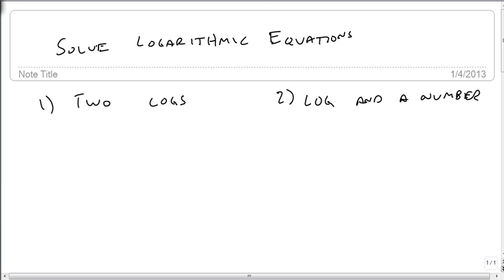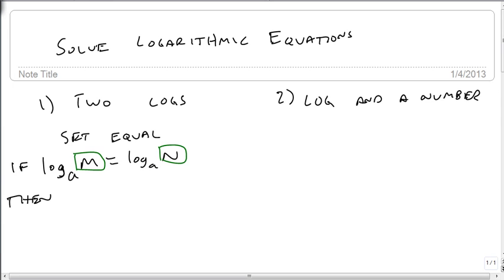The basic idea of the two logs is we set them equal to each other and then use the property, and this is related to our exponential property: log base a of m equals log base a of n. So if this is true, then since the log base a's match, in order for these sides to be the same, m has to equal n. And then we can solve m equals n and get our answers.